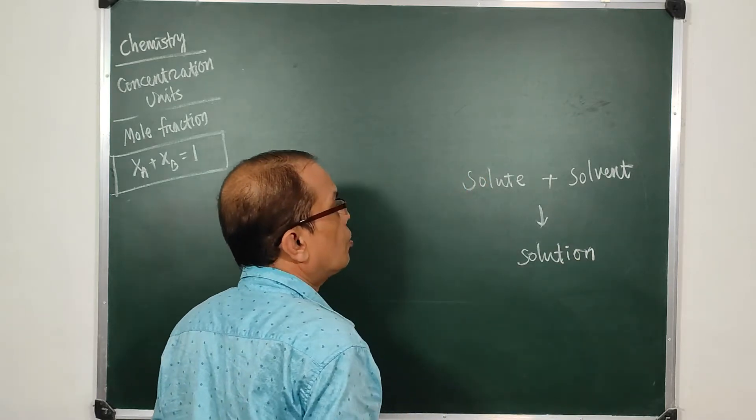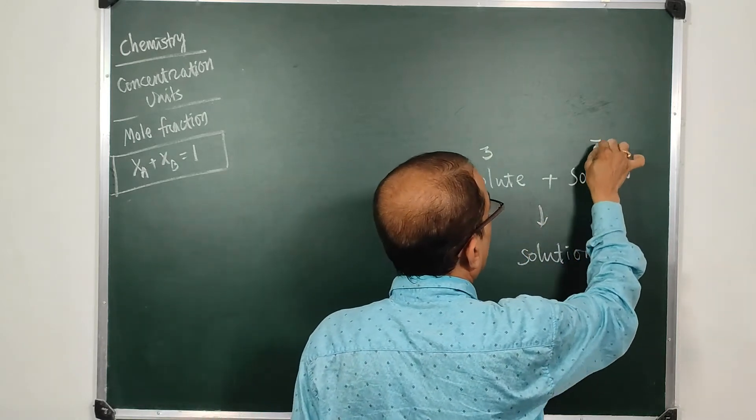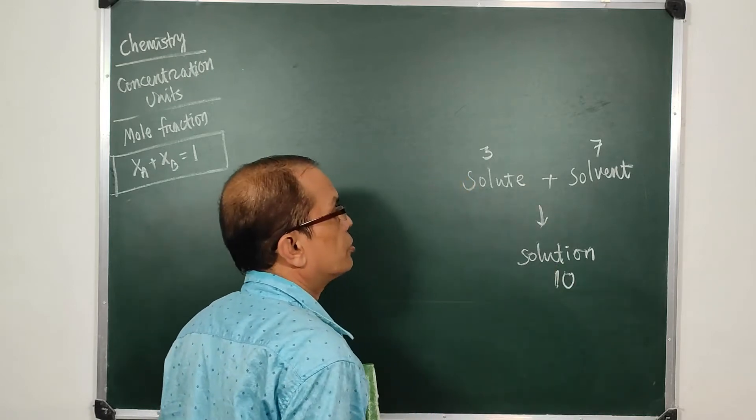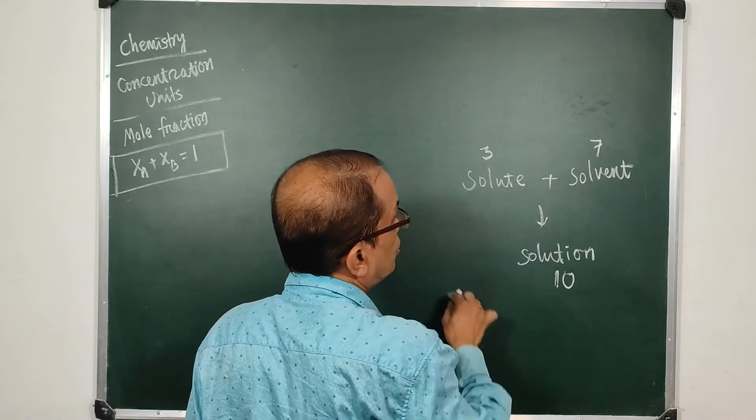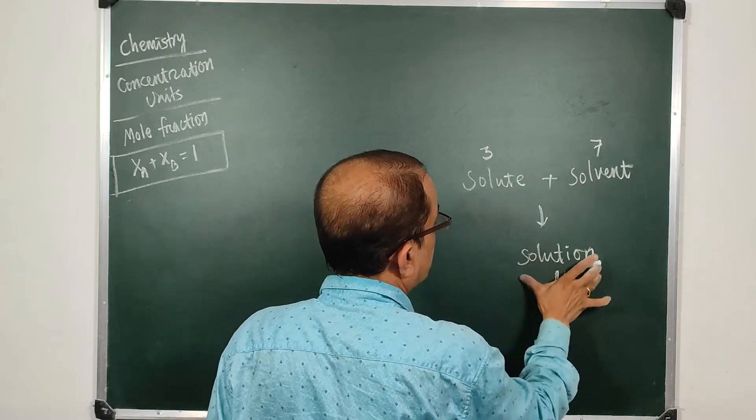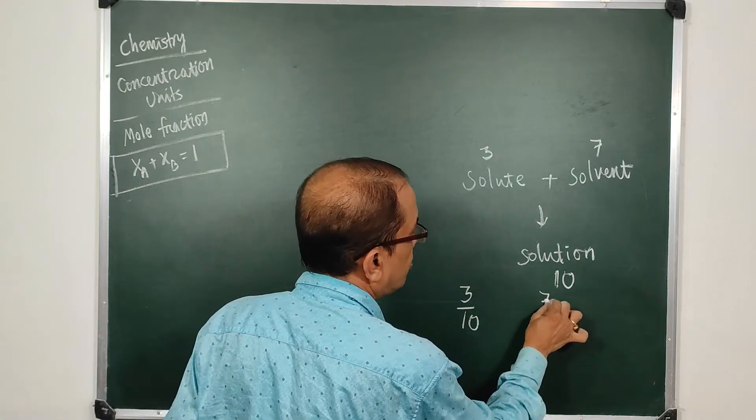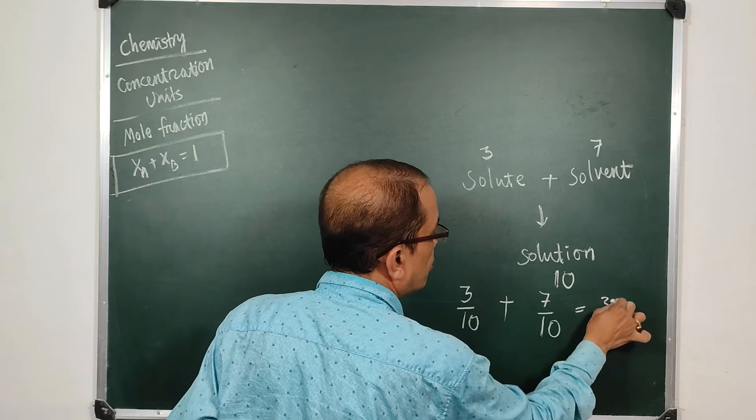Suppose we have three moles of solute dissolved with seven moles of solvent to produce ten moles of solution. So what is the ratio in which solute and solvent are present in the solution? Clearly one is 3 upon 10, the other is 7 upon 10